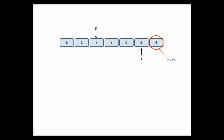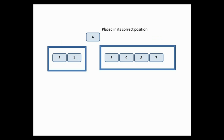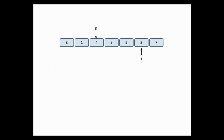P is incremented by 1 and I moves to the next location. 8 is not less than 4, so no swapping takes place. At the end of the iteration, we simply swap the element at position P with the pivot. So 4 comes to the position P is pointing to, and 7 goes to the last position. Now 4 is placed in its correct position, with 3 and 1 on its left and all greater elements on its right.